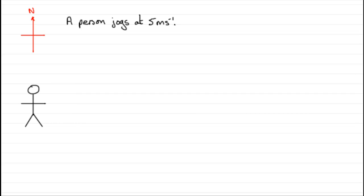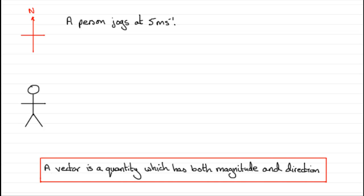Quantities that involve both magnitude and direction are often referred to as vector quantities. So, a vector quantity has both magnitude and direction.